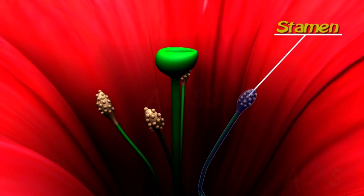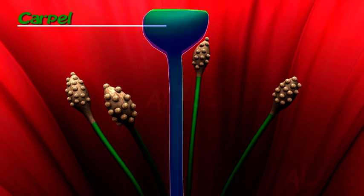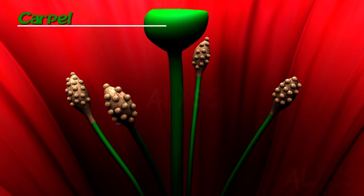Inside the petals is stamen, the male part, and the innermost part is the carpel, a female part of the flower.